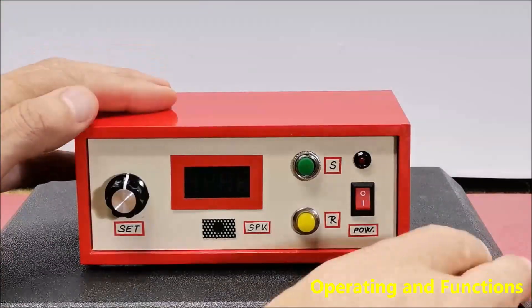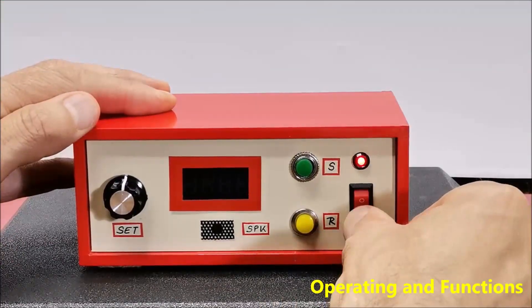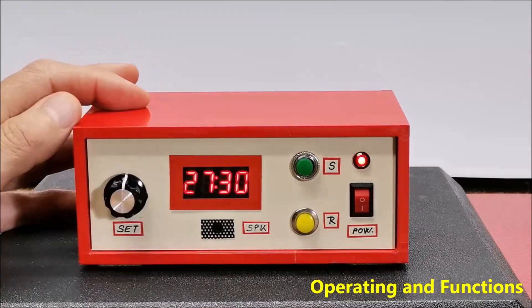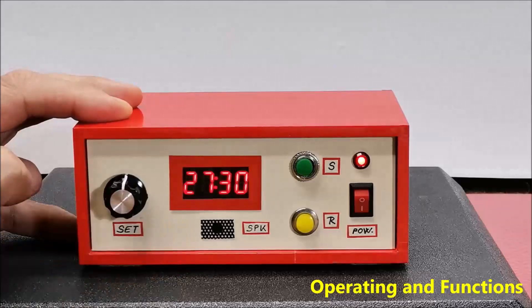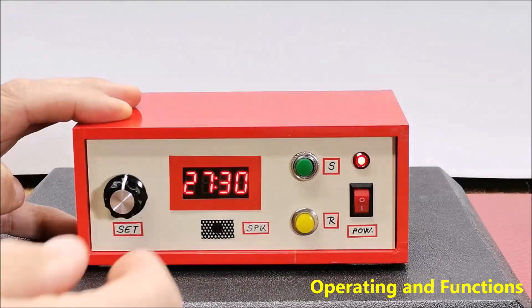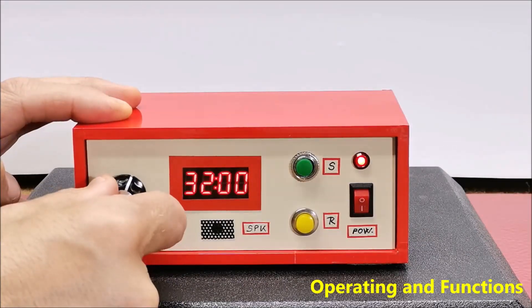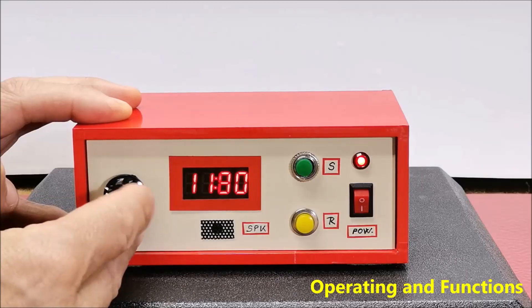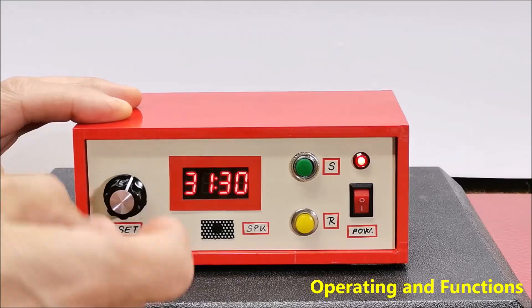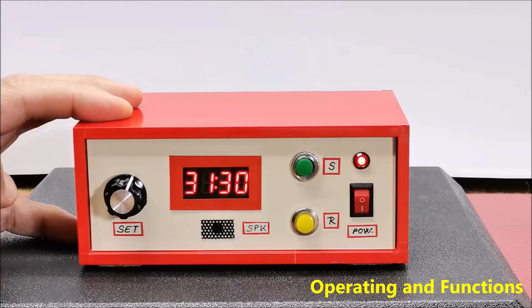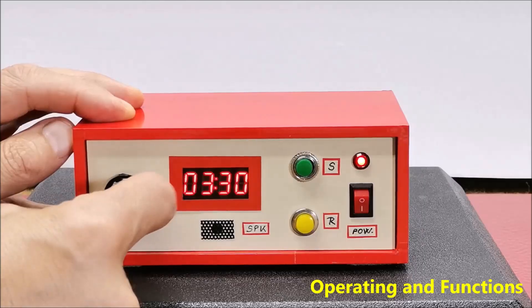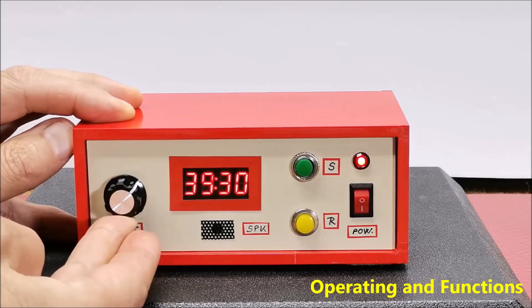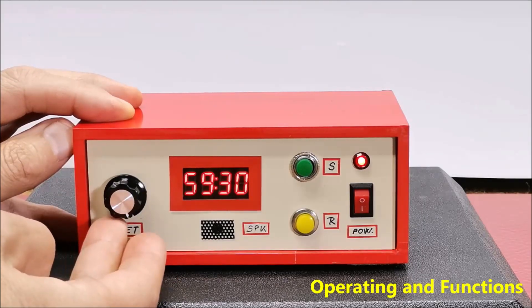When the device is turned on, the time appears on the screen which is determined by the position of the potentiometer. The default range when turned on is 60 minutes, so from 0 to 60 minutes.